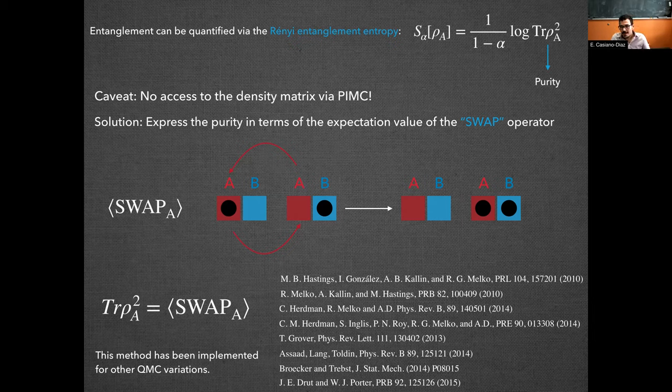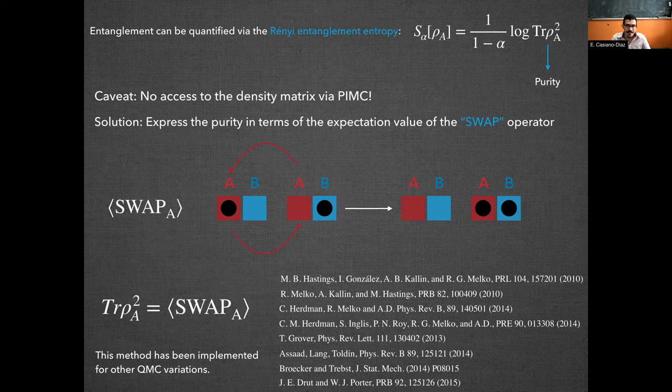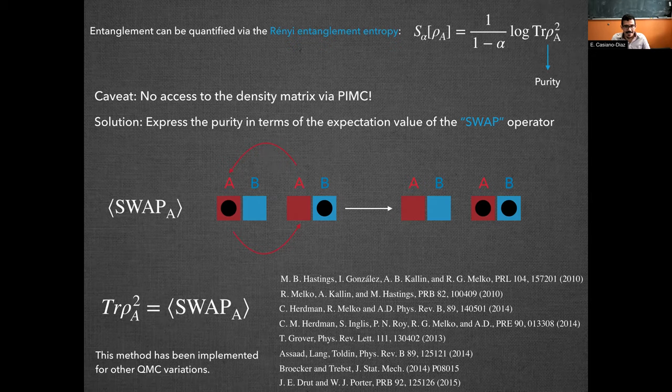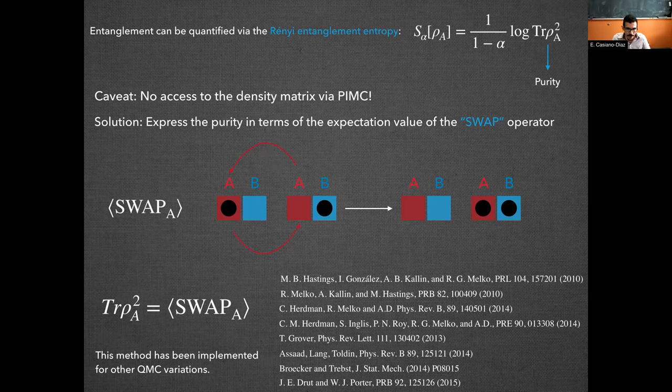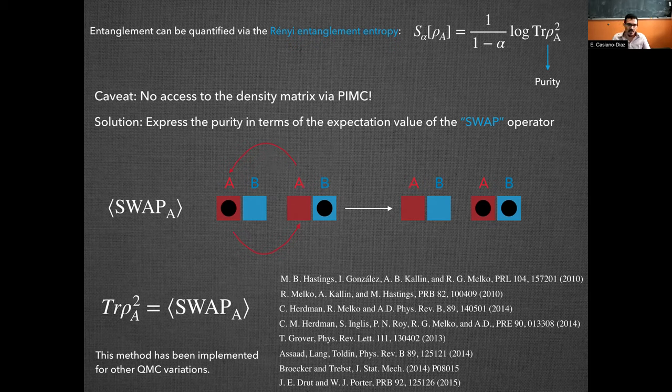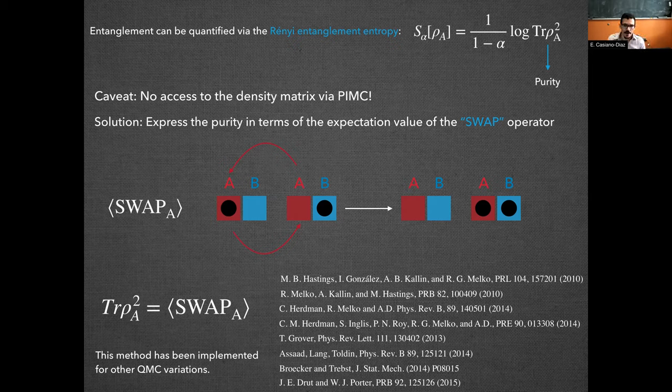So the solution for this is the following. It has been shown in the past decade various times that we can actually express trace of rho_A squared, also known as purity, we can express that value as the expectation value of the swap operator. Here we have a little cartoon of how this swap operator works. We have two systems bipartitioned into sub-regions A and B and we just interchange the contents of bipartition A between the two systems. So it has been shown for various other quantum Monte Carlo flavors.